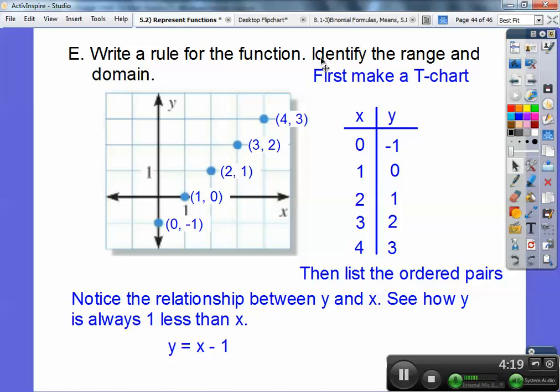And then it also said up here in the directions, don't forget, it said to identify the range and domain. These guys are my domains. Remember, your x values are your domains. These guys are my range, my y values. So when I list them, sorry that little box is in the way, your domain is 0, 1, 2, 3, 4. And your range are these numbers, negative 1, 0, 1, 2, and 3.